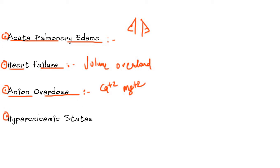The next indication is hypercalcemic states. There are various conditions involving hypercalcemia in the body, and once we administer loop diuretics they cause excretion of calcium, so we can benefit from the use of loop diuretics in these states.